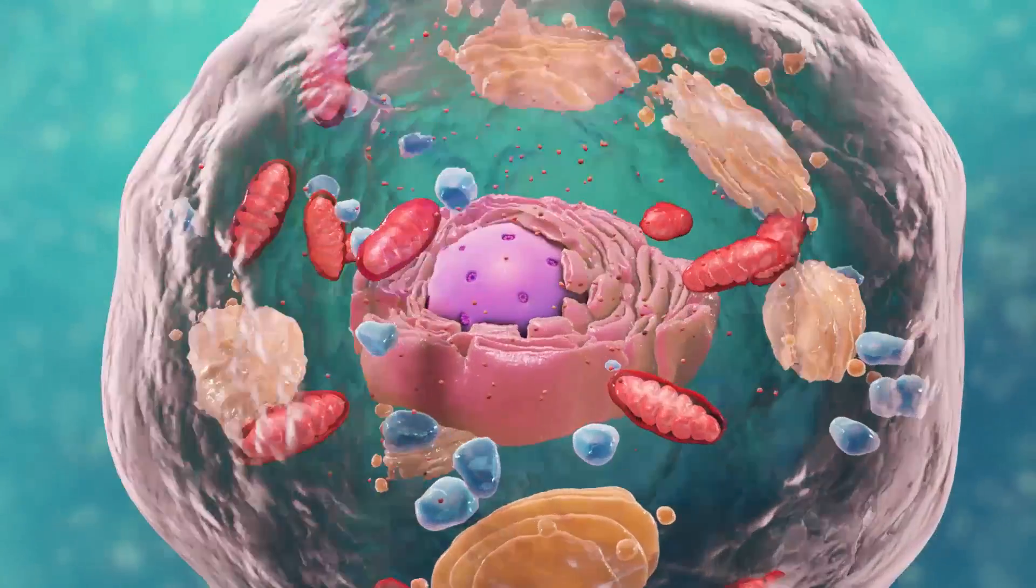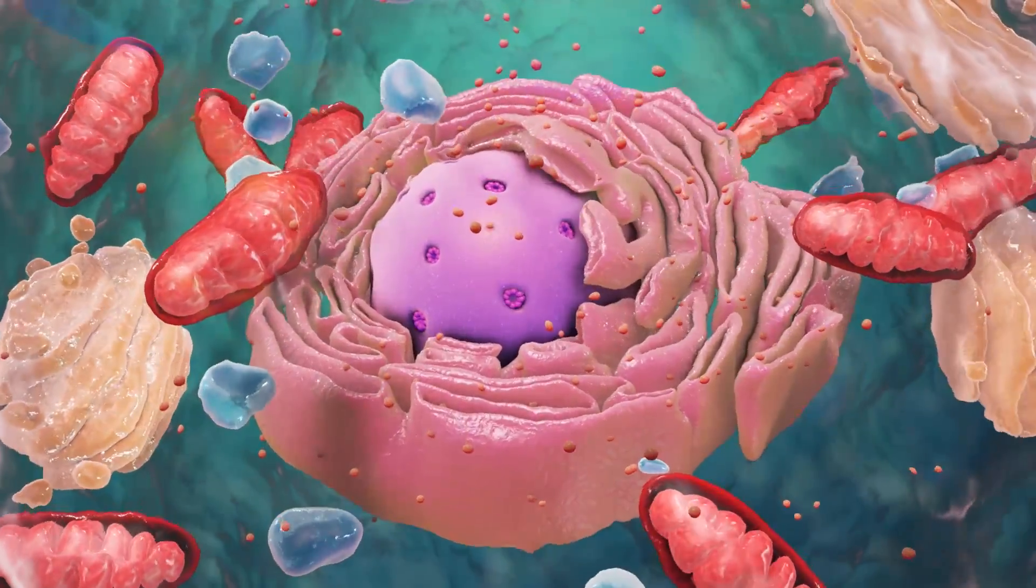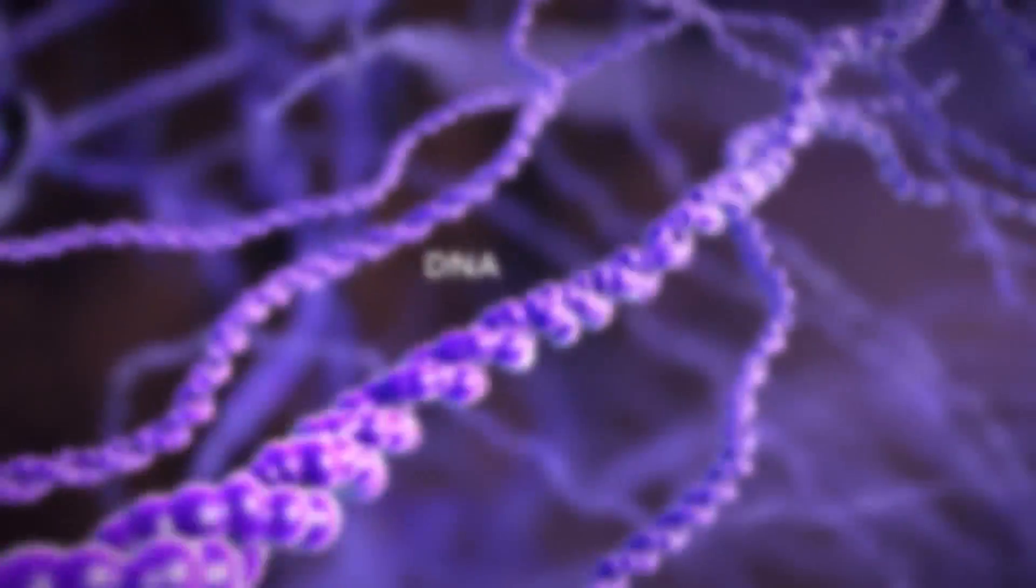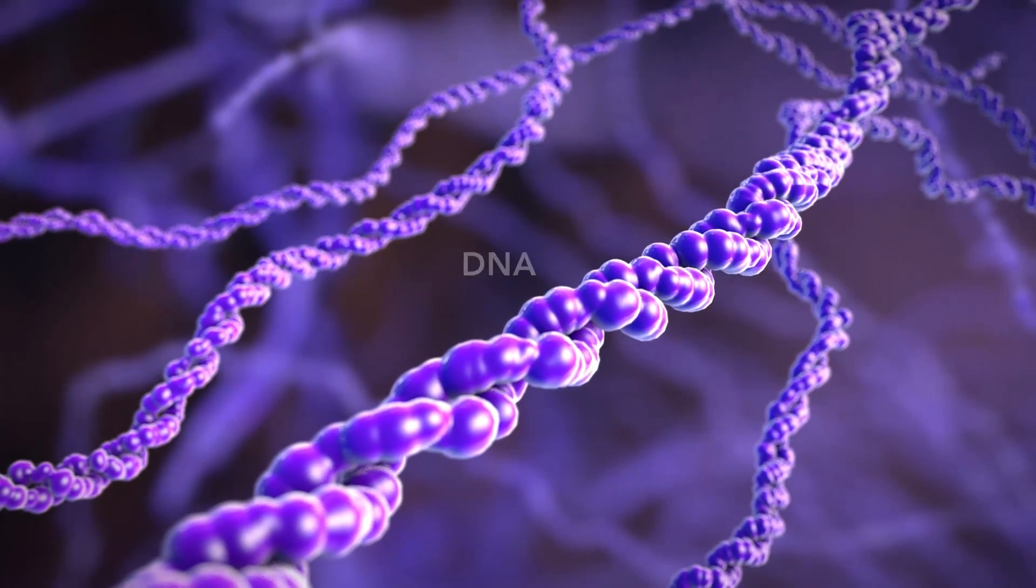Let's start with the nucleus, the control center of the cell. The nucleus contains DNA, or genetic material. DNA dictates what the cell is going to do and how it's going to do it.